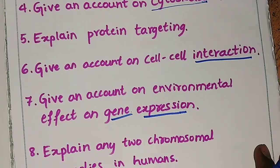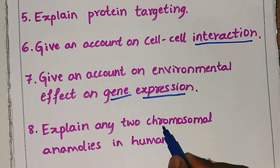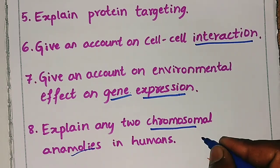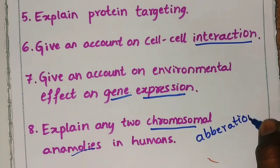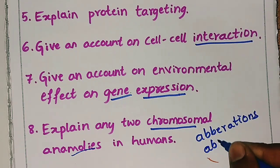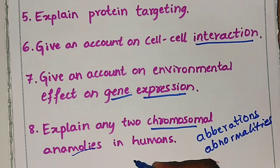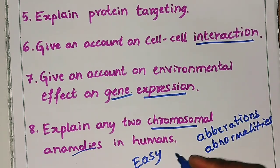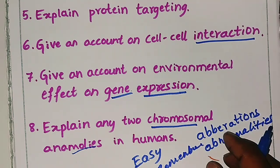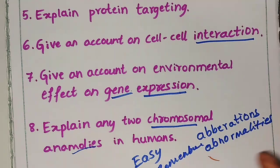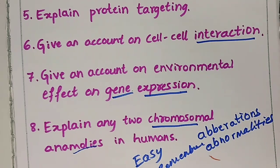The eighth question is: explain any two chromosomal anomalies in humans — also called chromosomal aberrations or abnormalities. This is a very easy topic; it is easy to remember the types of anomalies and their examples. Try to cover it. If you want, comment and I can make a video on it.